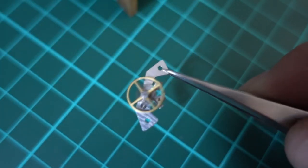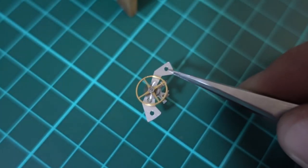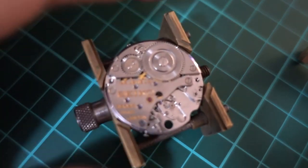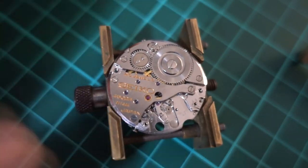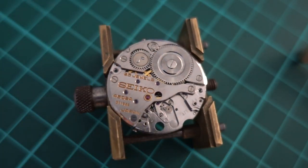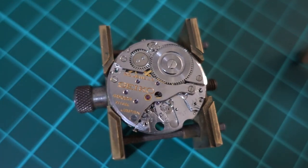So that's the bottom of the balance there. You can see the adjustment system there, it's got some extra bits and pieces on it but otherwise it's fairly conventional. You can see the pallet cock there and also the pallet, well the end of the pallet fork.